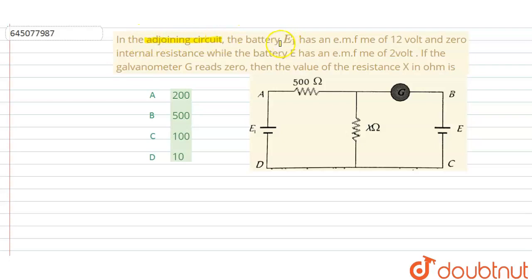In the adjoining circuit, the battery E1 has an EMF of 12 volts and zero internal resistance, while the battery E has an EMF of 2 volts. If the galvanometer G reads zero, then find the value of the resistance X in ohms.